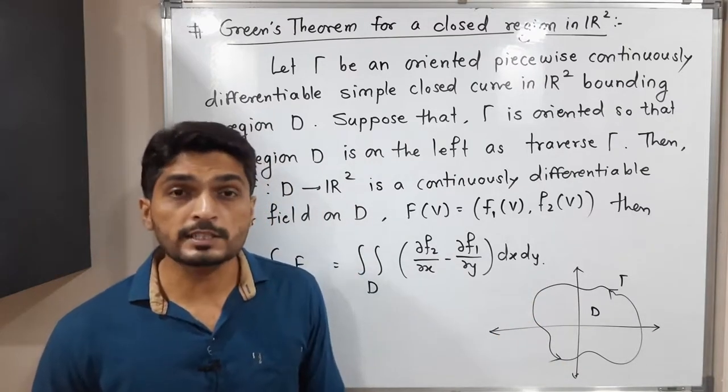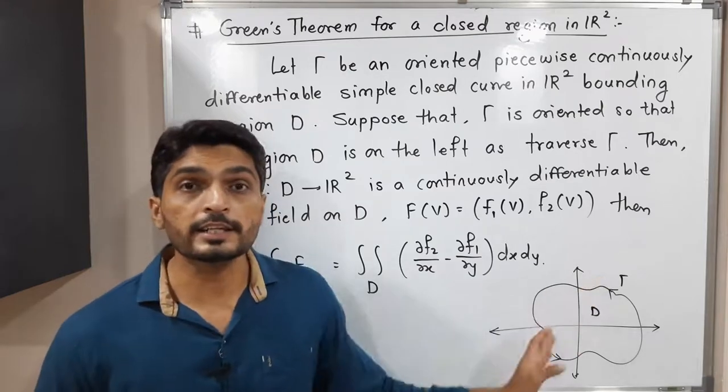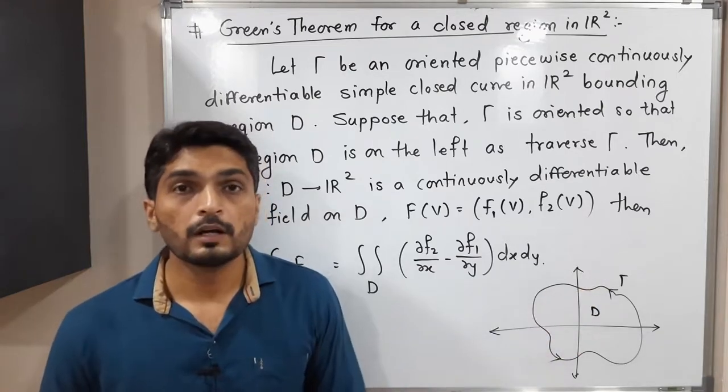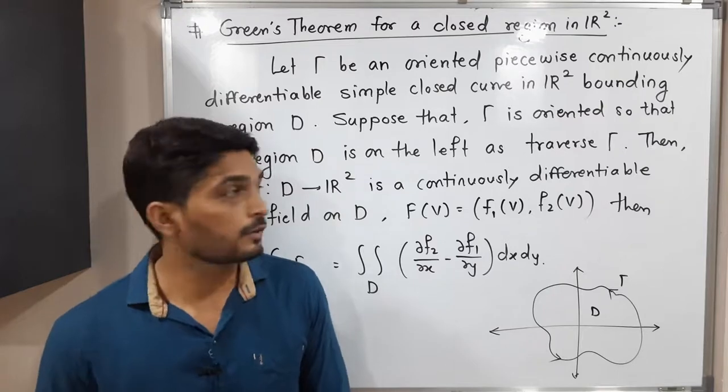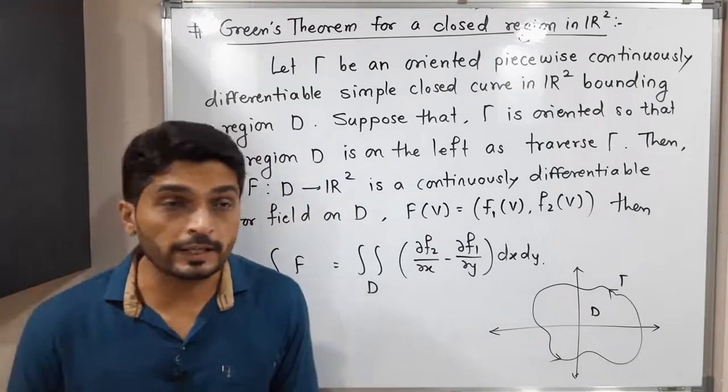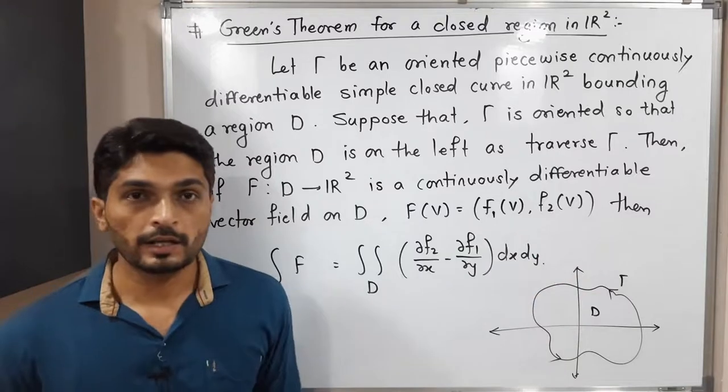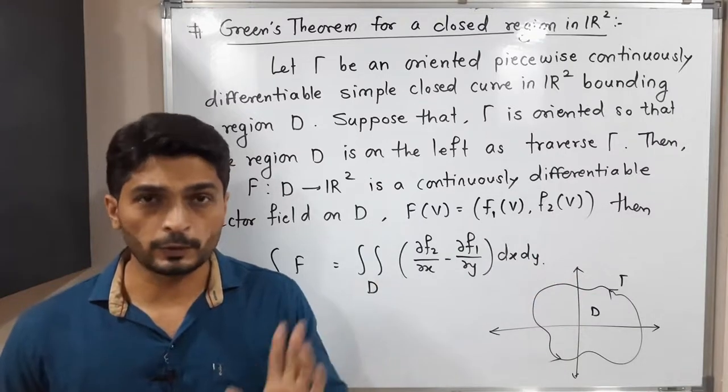Obviously D will lie on the left side of gamma. Vector field F is defined on this region D. F is from D to R², so it will have two components: first one is F₁, second one is F₂.